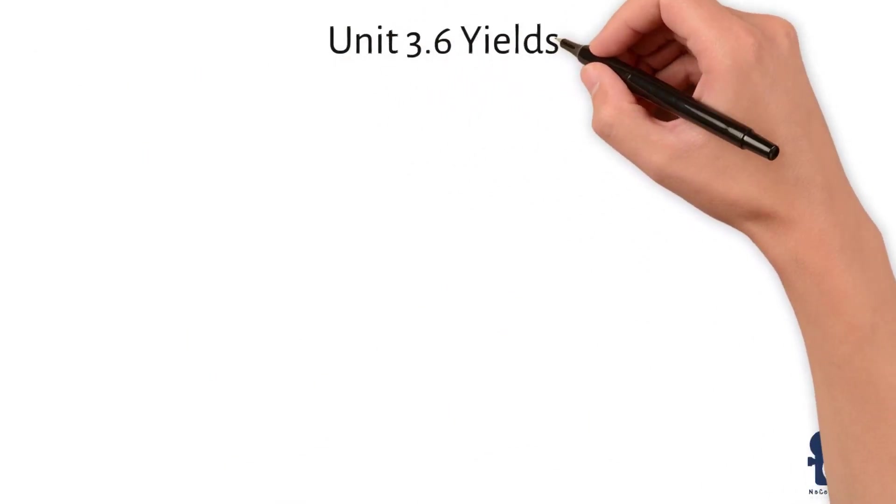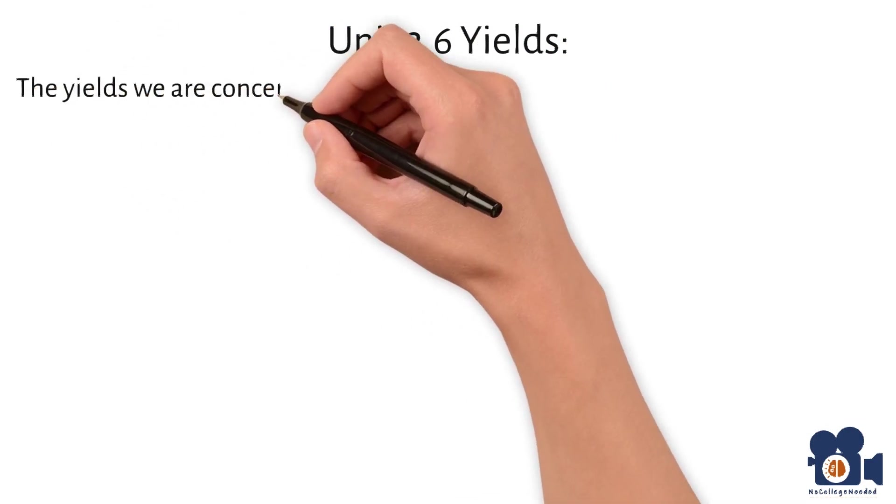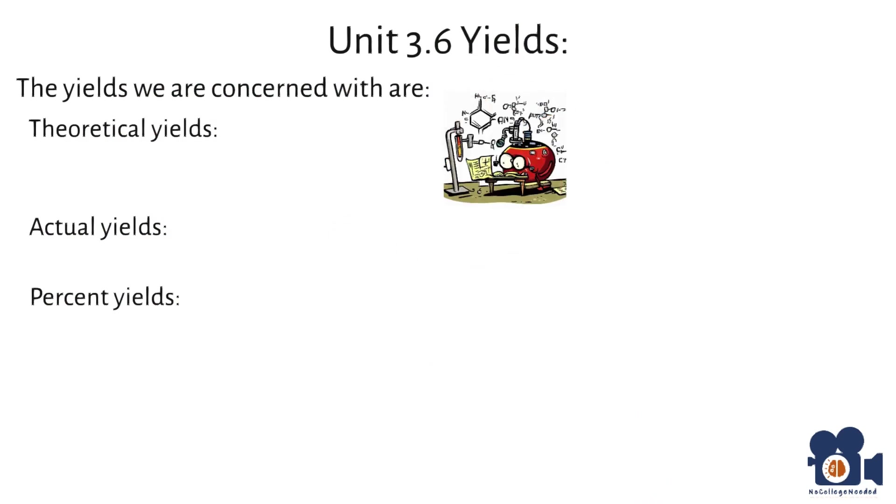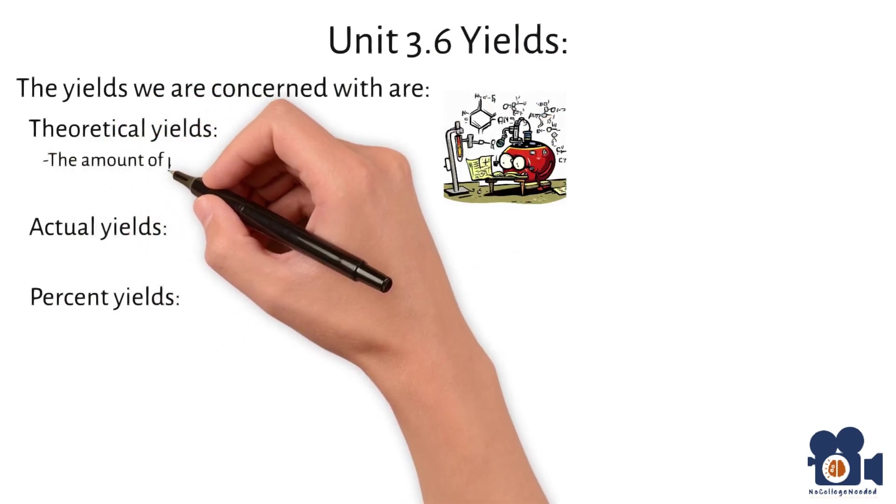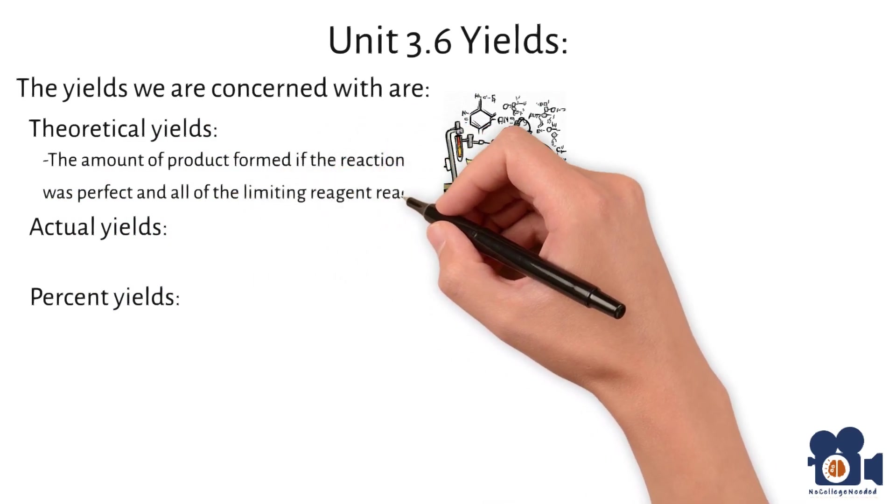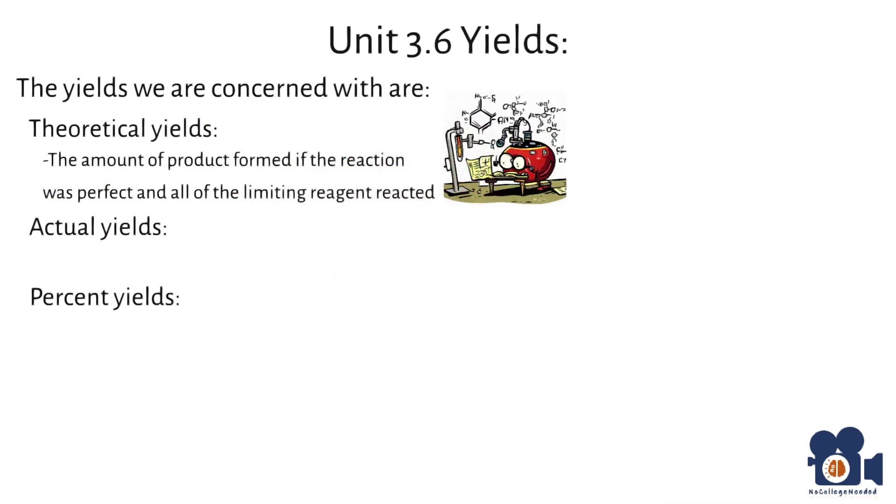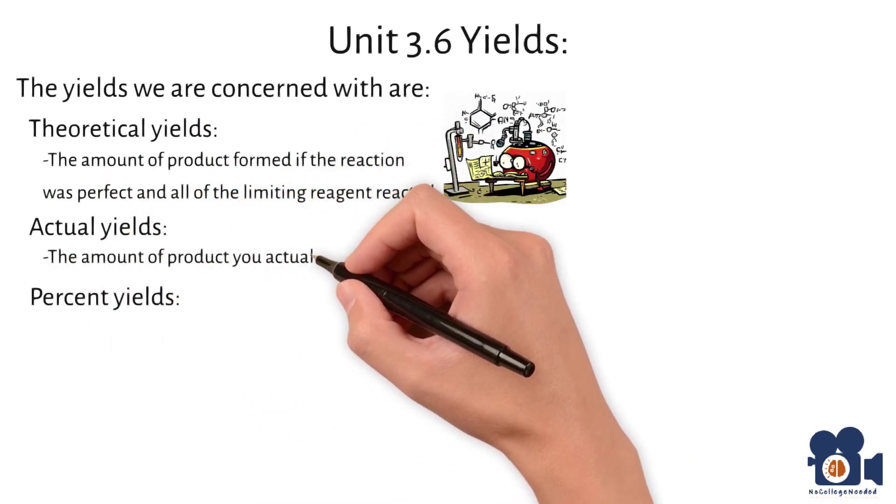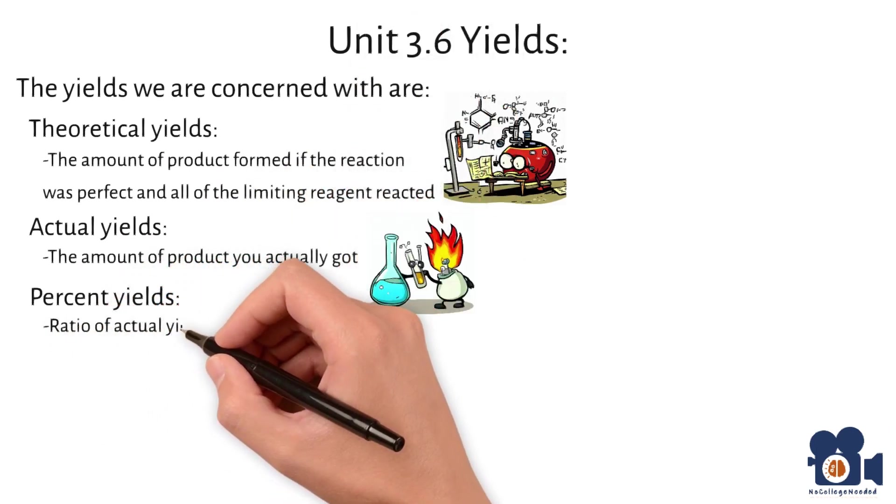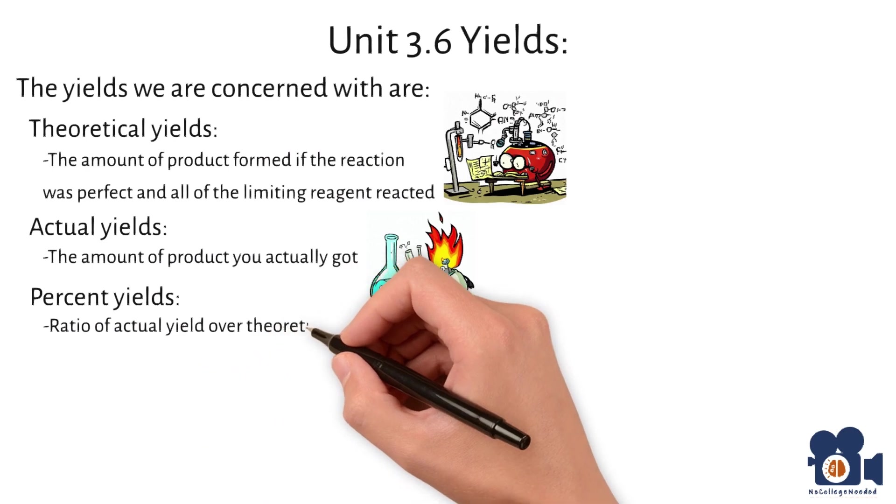This leads us into yields and the yields we are concerned with are the theoretical yields, actual yields, and percent yields. The theoretical yield is the amount of product formed if the reaction was perfect and all of the limiting reagent reacted. The actual yield is the amount of product you actually got and the percent yield is the ratio of the actual yield over the theoretical yield as such.